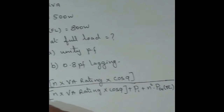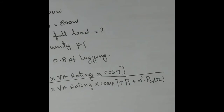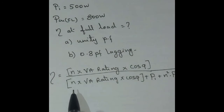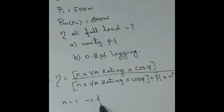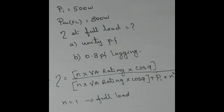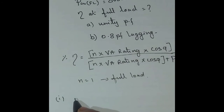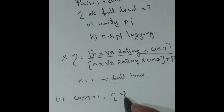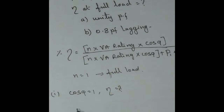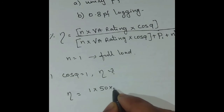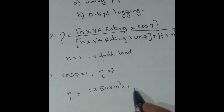For percentage efficiency, we multiply by 100. Since it is full load condition, n is equal to 1. Case 1: power factor is unity, so cos φ equals 1. Substituting: efficiency equals 1 × 50,000 × 1, divided by 50,000 × 1 plus losses.